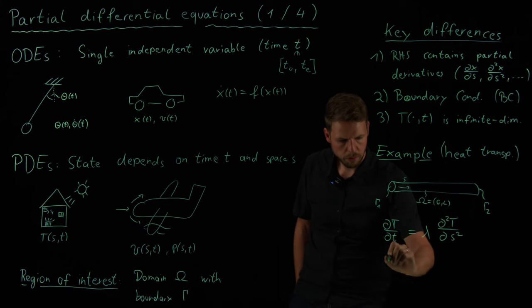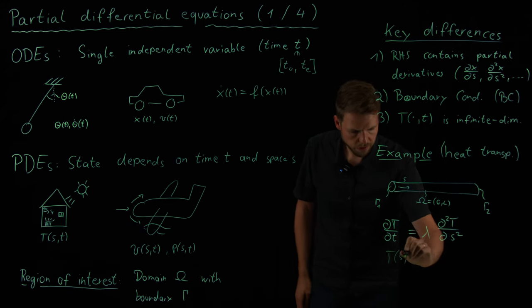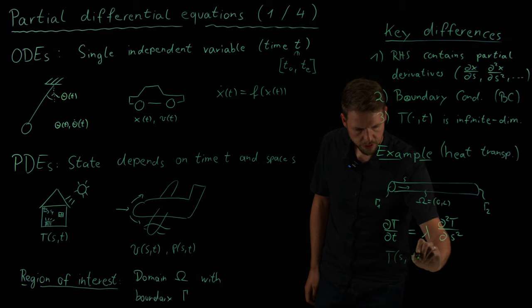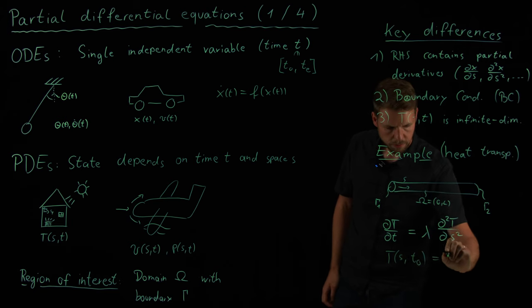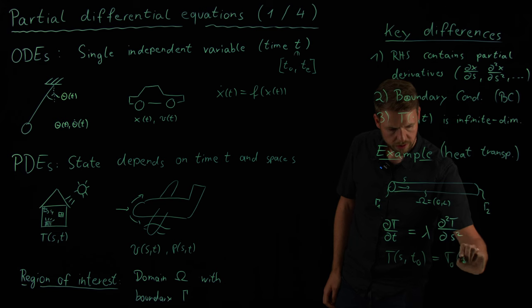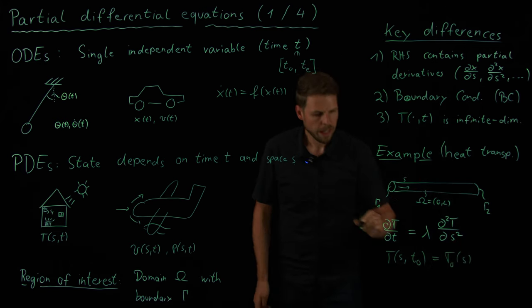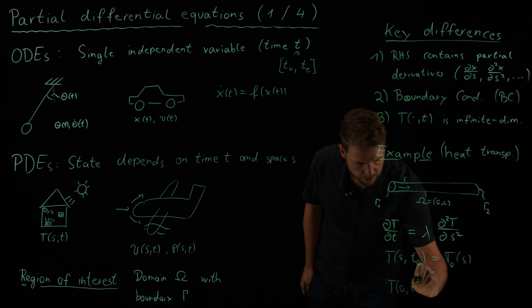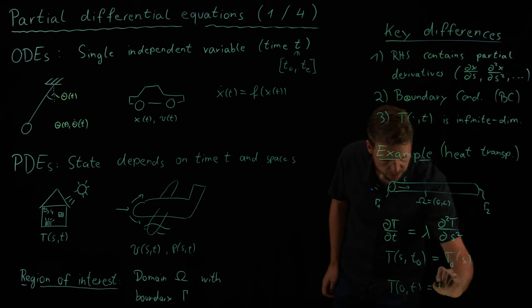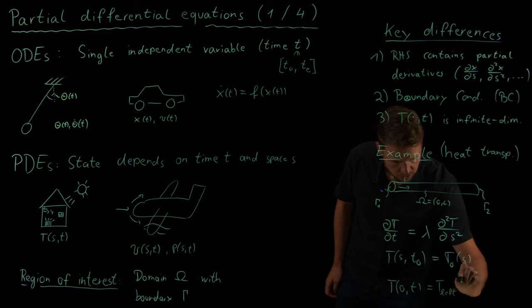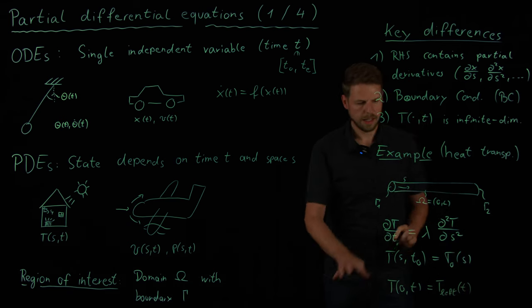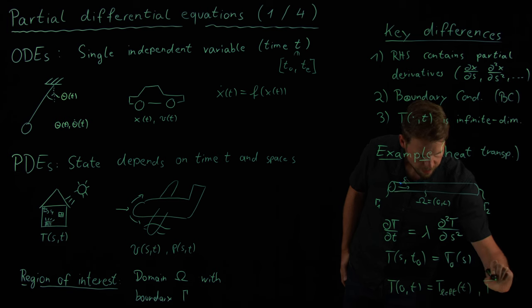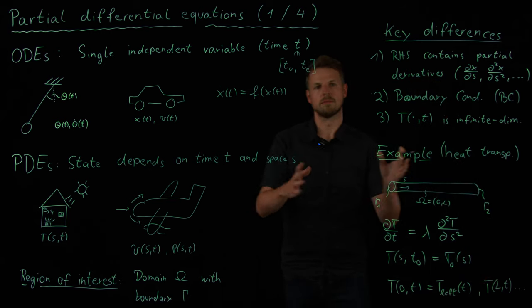So, again, what's now important is the temperature at specific points in space at time zero is defined as some T zero of s. So, we have an initial temperature distribution, and we also have these boundary conditions. So, we say T of zero at arbitrary time is some sort of T. Let's call it left of T. And T at position L and time in a similar manner.